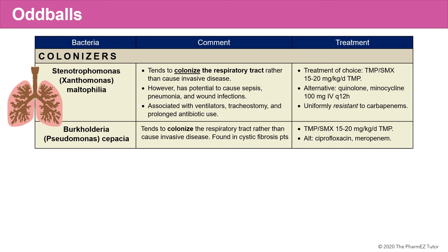Another colonizer is Burkholderia or Pseudomonas cepacia. This bacteria also tends to colonize the respiratory tract rather than cause invasive disease, and is commonly found in cystic fibrosis patients. If treatment is needed, trimethoprim-sulfamethoxazole is used; alternatively, ciprofloxacin or meropenem.